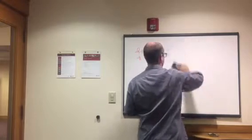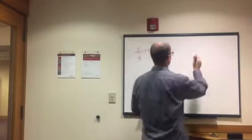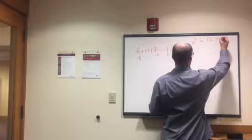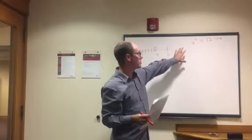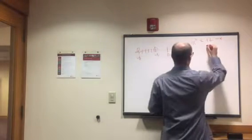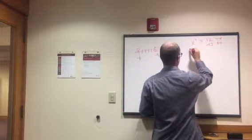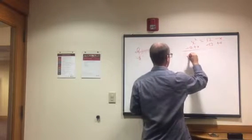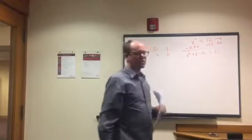Let's do another example. What if x squared equals 12 minus x? Remember, we need to get everything over to the left side to equal zero. So subtract 12 and add x to both sides: nothing is left on the right side. That gives us x squared plus x minus 12 equals zero.